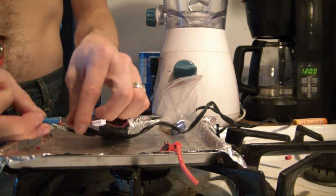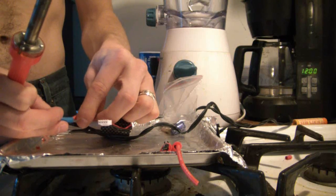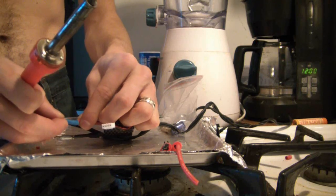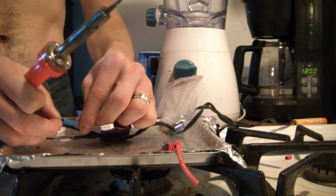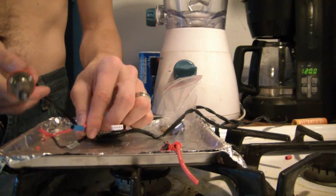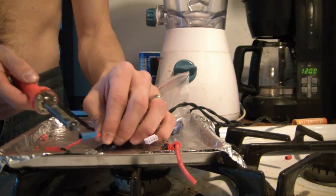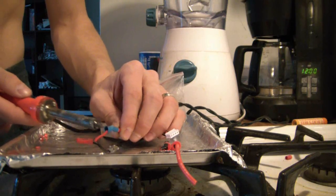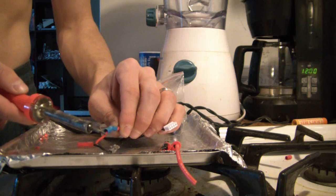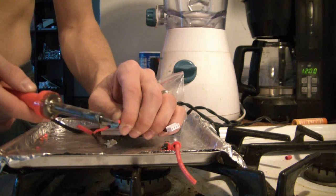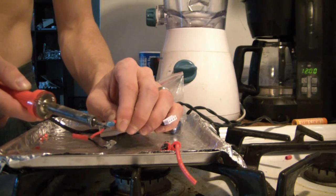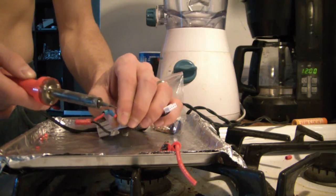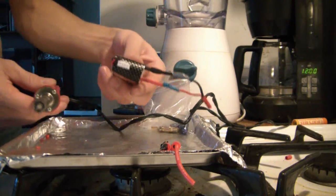So then you would just push the heat shrink back down. It's going to shrink a little bit because it's still hot, but go back over it with your soldering iron. And there it is.